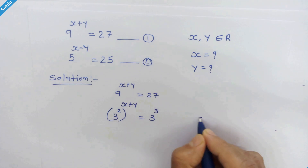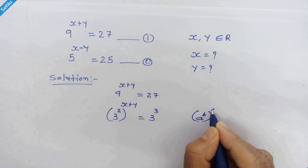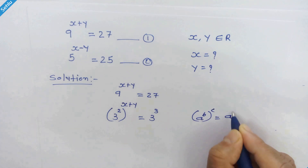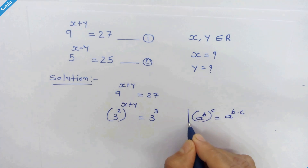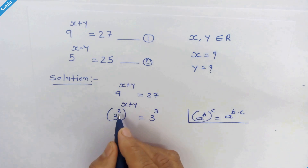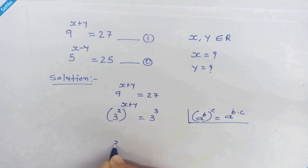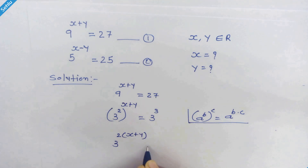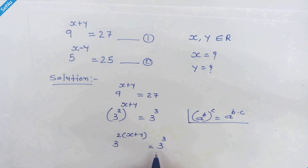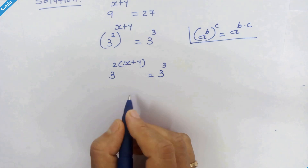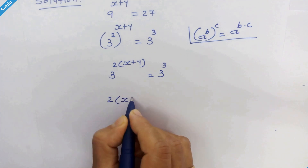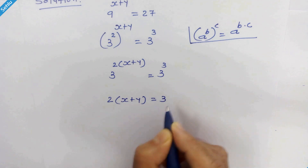Now let's recall this rule: if we have a raised to b, whole raised to c, then it equals a raised to b times c. Applying this rule here, the 2 and x plus y can multiply. So we have 3 raised to 2 times (x plus y) is equal to 3 cubed. Since we have the same base on both sides, we equate the exponents: 2 times (x plus y) is equal to 3.